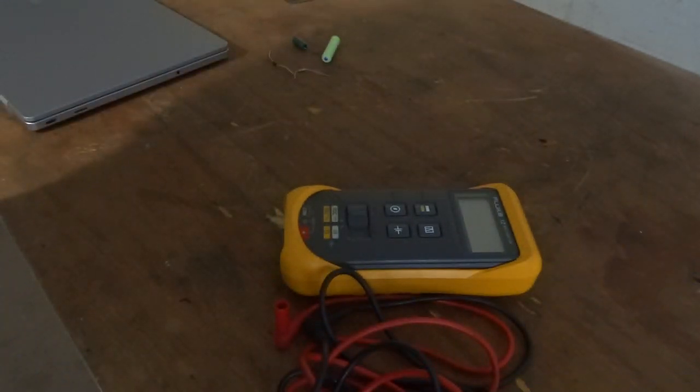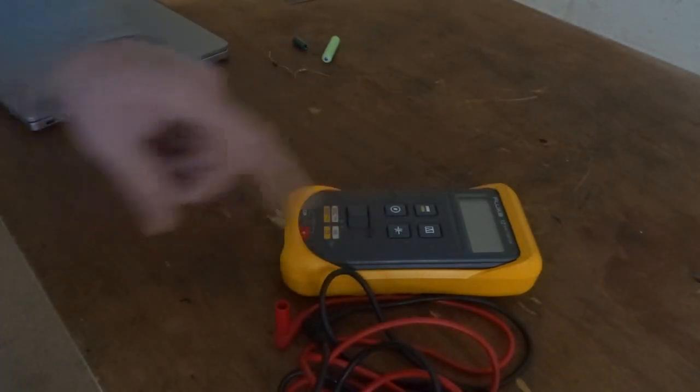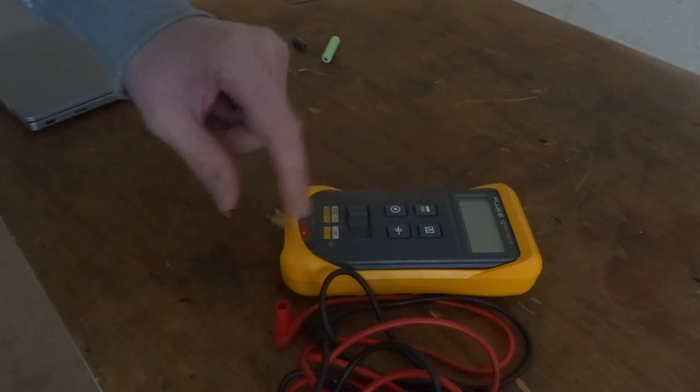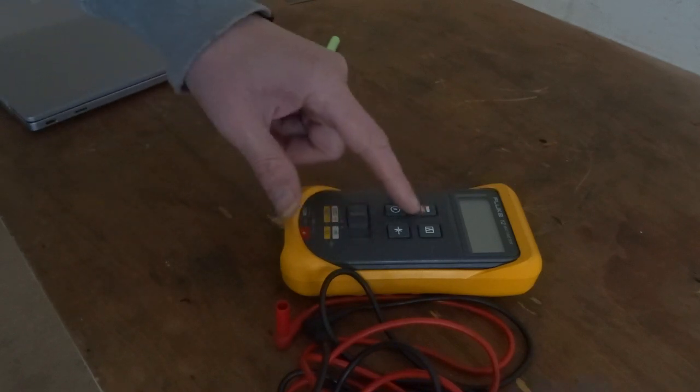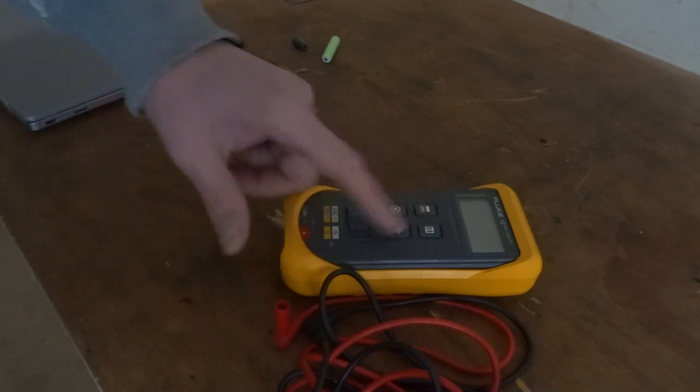Obviously built like a brick as all Flukes are. It's got a lot of functionality on this one. It's got volts AC, DC, continuity, resistance, min-max, capacitance.